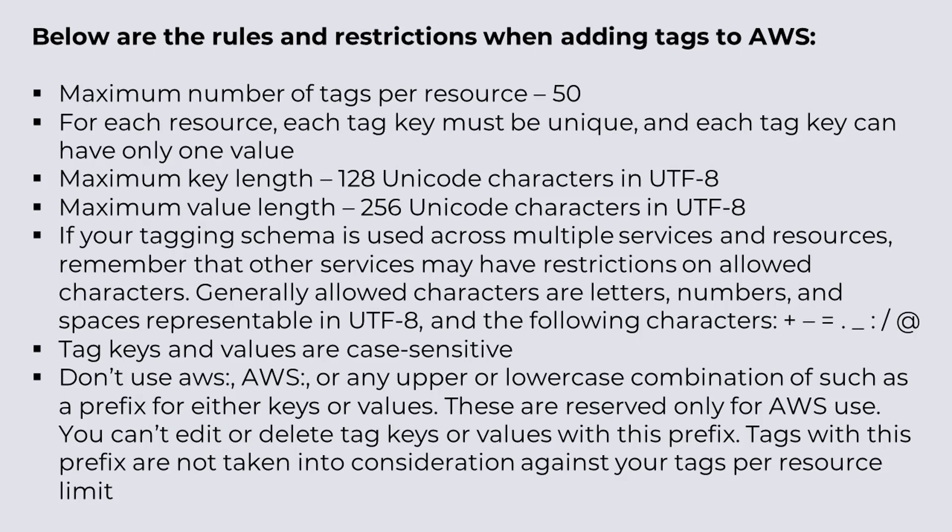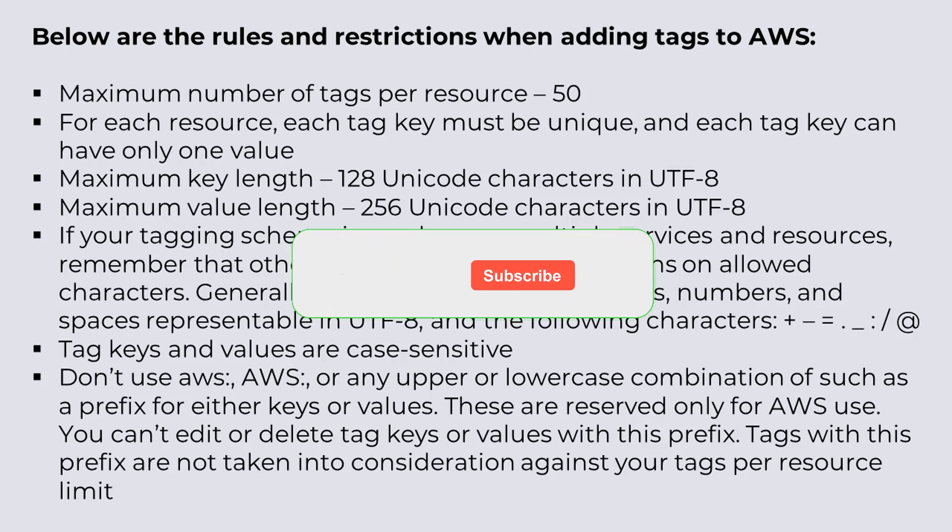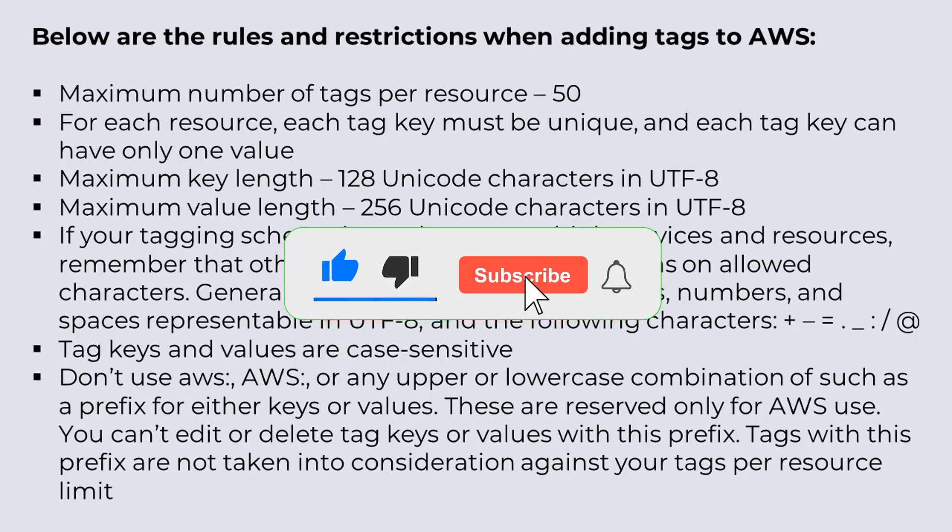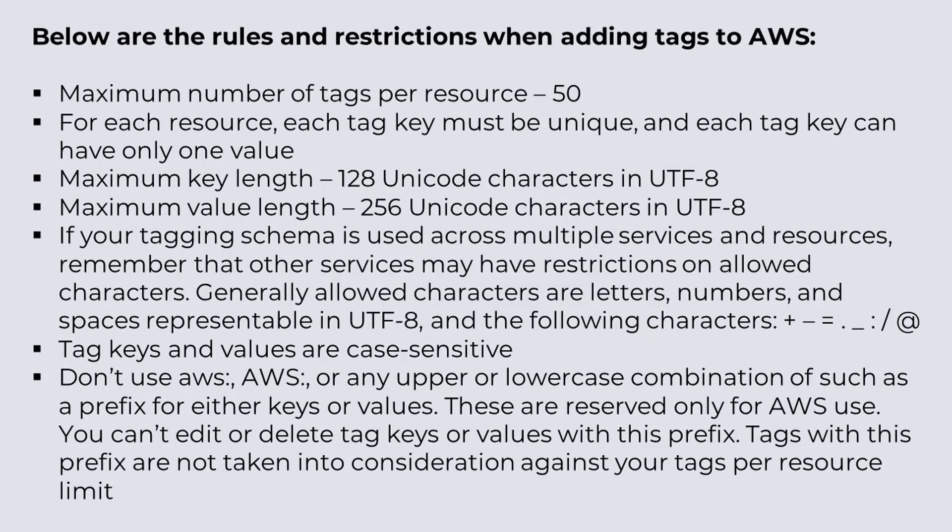Before we end, here are the rules and restrictions when adding tags in AWS. The maximum number of tags per resource is 50. For each resource, each tag key must be unique — you cannot duplicate, and each tag key can have only one value. The maximum key length is 128 characters, and the maximum value length is 256 characters.